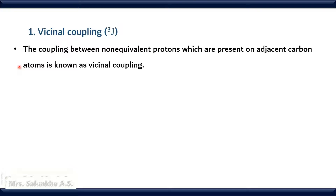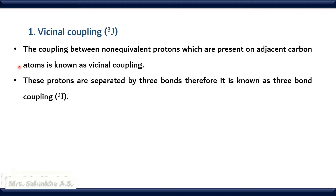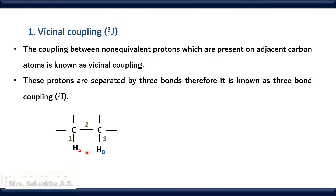These protons are present on vicinal positions and are separated by three bonds. Therefore, vicinal coupling is also known as three-bond coupling, that is ³J coupling. HA and HB are the non-equivalent protons present on adjacent carbon atoms. Therefore, the coupling between these two protons is of the type vicinal coupling. These protons are separated by three bonds — one, two, and three — and therefore it is also known as ³J coupling.